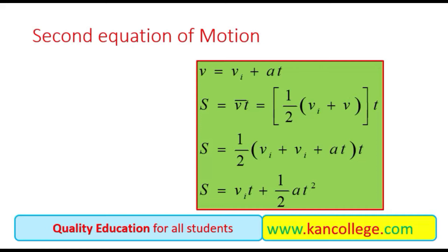Second equation of motion. As we know from the first equation, Vf = Vi + At. Displacement is equal to average velocity multiplied by time: S = V̄ × T. When average speed is multiplied by time it gives distance. Average speed is the average of initial velocity and final velocity: (Vi + Vf) / 2.